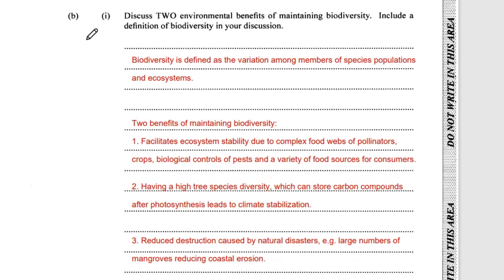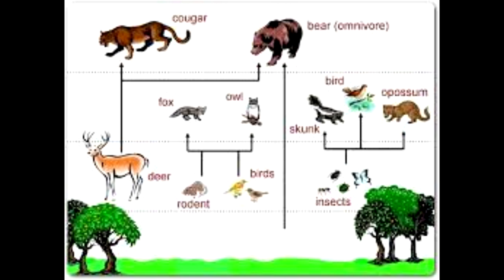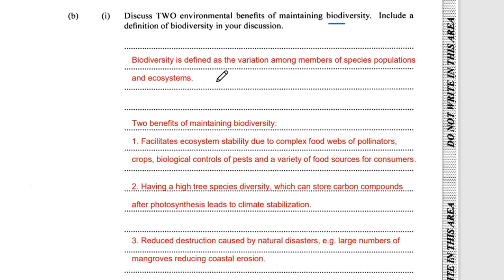Question 4B1: discuss two environmental benefits of maintaining biodiversity, including a definition. Biodiversity is defined as the variation among members of species, populations, and ecosystems. For example, a forest next to a swamp may have many different species of birds, frogs, snails, fish, insects, and plants, as well as multiple micro-ecosystems such as puddles and logs with insects. This also accounts for genetic variation, as members of the same species can be quite genetically different, leading to more genetic vigour.